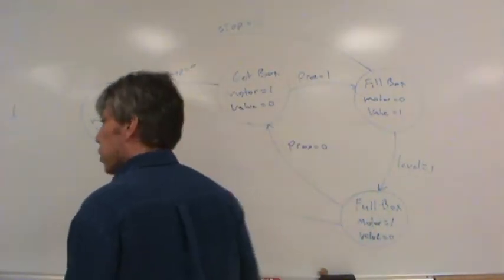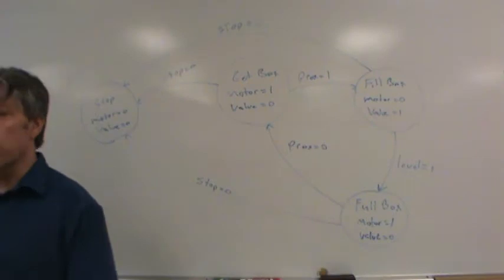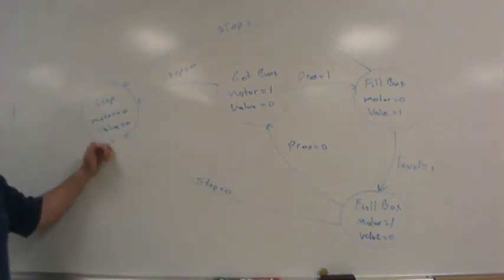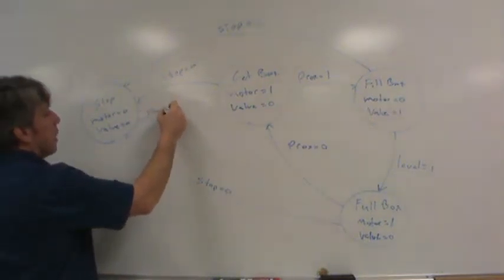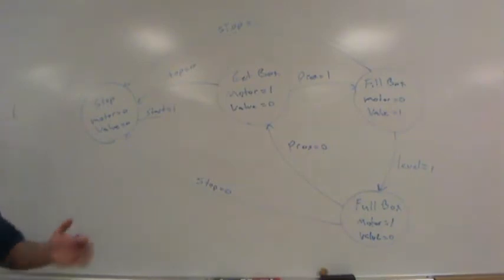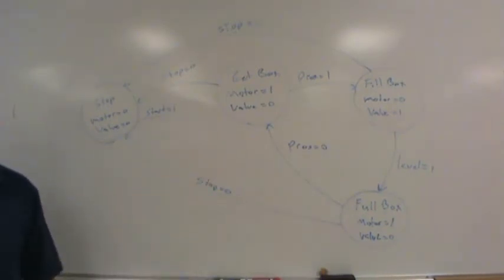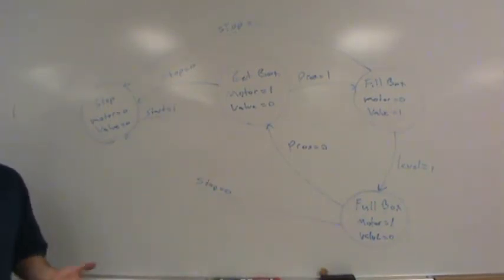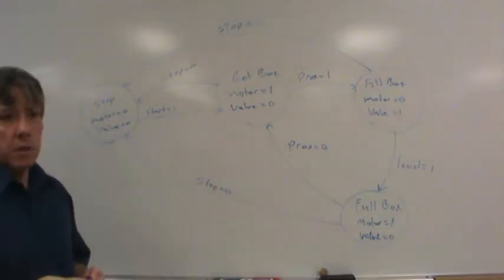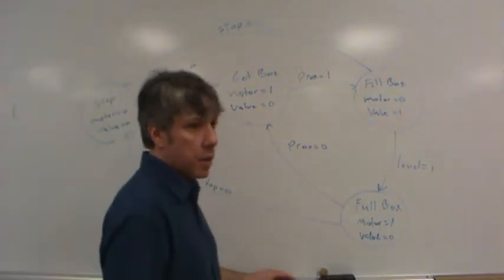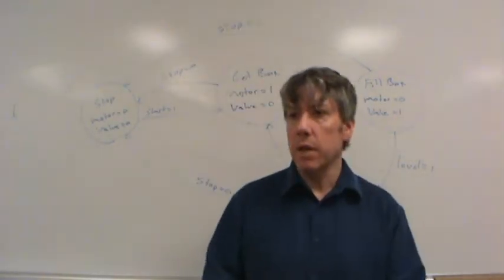Now what do you think I should do? What state should I go to? Let's say we're in the stop state and the user presses the start button. That would probably be our transition out, right? Start equal one. But where should we go? Should we go to get box, fill box, or full box? What do you think? I would say get box, right? That's probably what the user is going to expect, is that the machine's ready to accept an empty box and fill it.